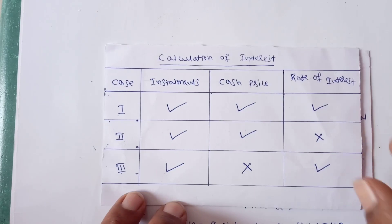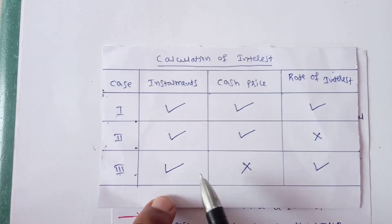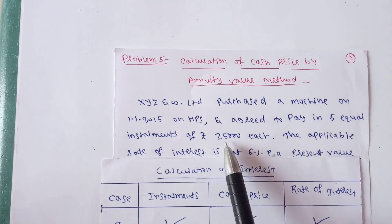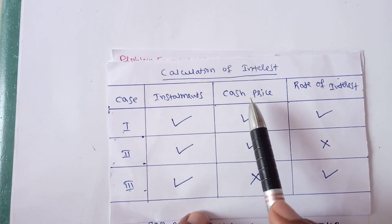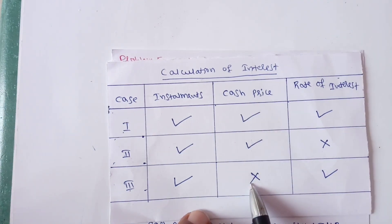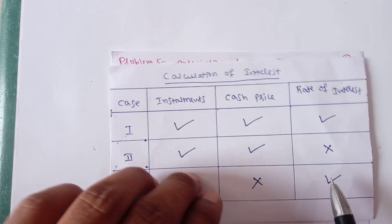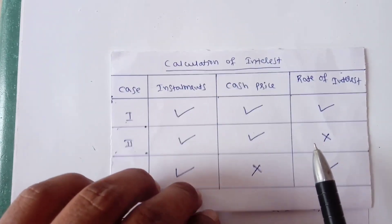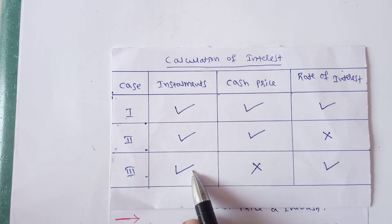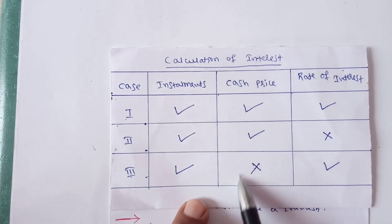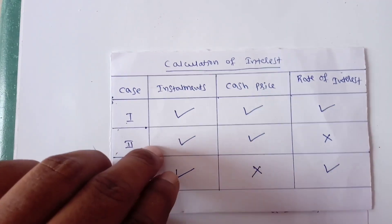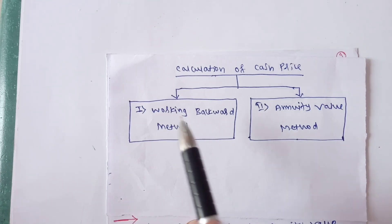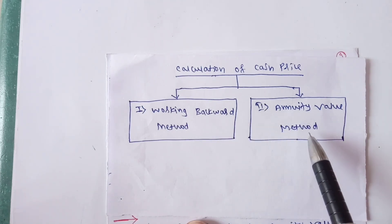In this problem, installments are given — 5 installments of Rs.25,000 each. Cash price is missing, and the rate of interest is given at 6%. So in this problem, installment is given, rate of interest is given, but what is missing is the cash price.